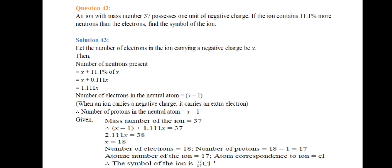Mass number is 37, so (x - 1) + 1.11x = 37. Solving, x = 18. Number of electrons = 18, number of protons = 18 - 1 = 17. So atomic number is 17, which corresponds to Chlorine. The symbol is ₁₇Cl⁻ with mass number 37.